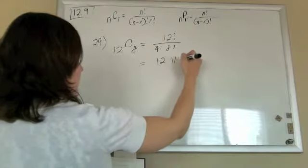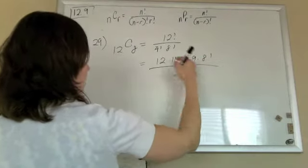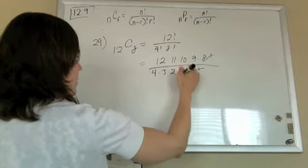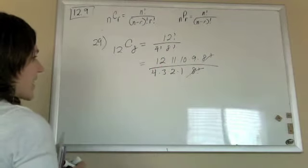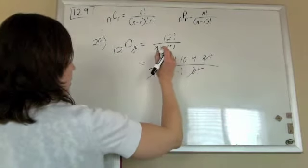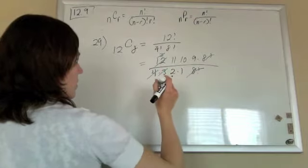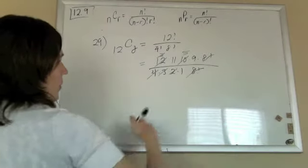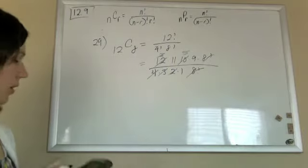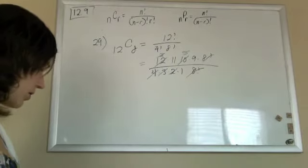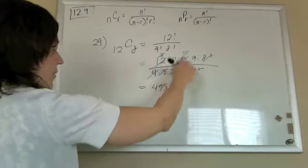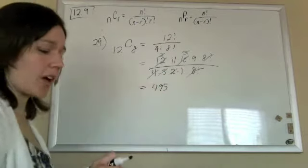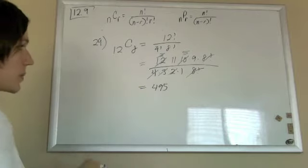I'll do 12 times 11 times 10 times 9. So I'll let the 8 factorial cancel out with 8 factorial down there. But I'll still have the 4 factorial. And if I go to cancel, divide by 4, I'll get 3 to let the 3s cancel. Divide by 2, I'll get a 5. So on the top, just 11 times 5 times 9 is 495. And there are different ways to cancel these. Just as long as everything on the bottom ends up canceling, it'll be fine.